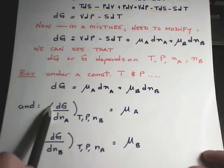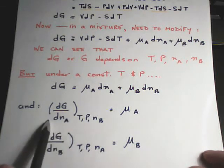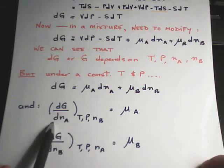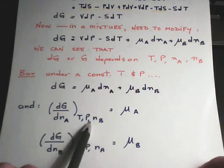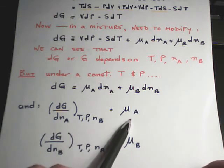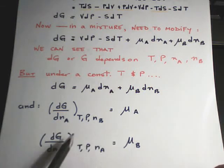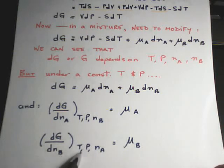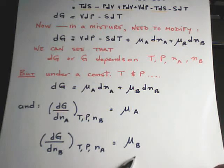We can regenerate the definitions: DG/DNA at constant temperature, pressure, and number of moles of B is the chemical potential of A in a mixture of A and B. And DG/DNB at constant temperature, pressure, and number of moles of A is the chemical potential of B in a mixture of A and B.